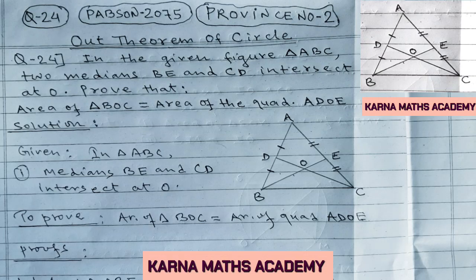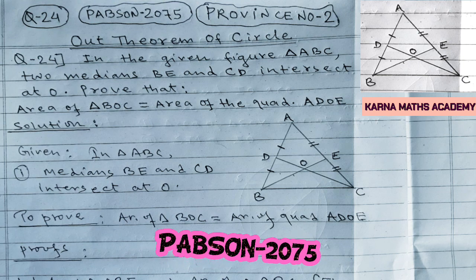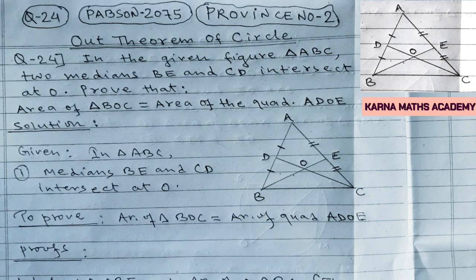Hello dear students, welcome to Corner Mass Academy. Today in this video we are going to prove one of the most important questions asked in Pabson 2075, province number two, question number 24. This question is from class 10, from the relation between area of a triangle and medians of a triangle.